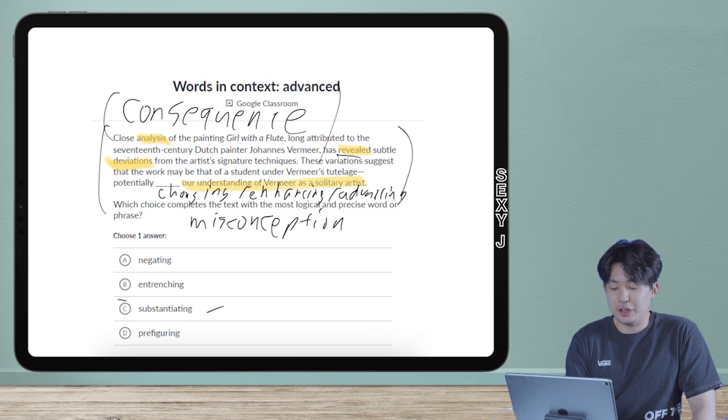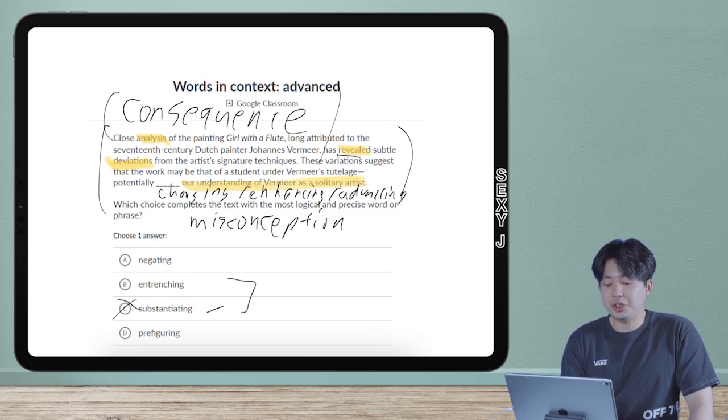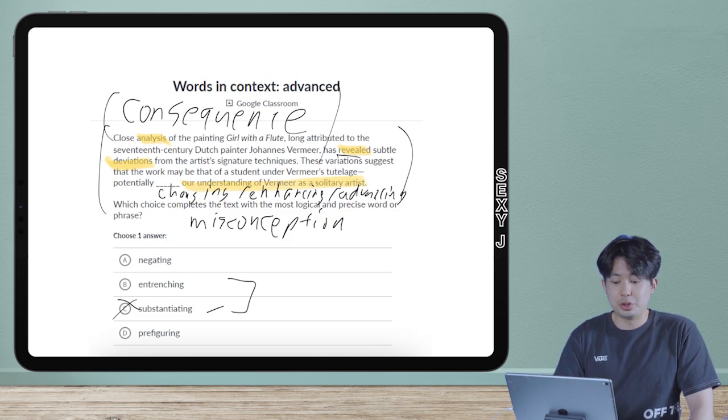So substantiation cannot be for revealing. Substantiation is providing support for something you were already saying. So that is out. Entrenching - again, you do have to study the vocab on your own, guys. So you have to learn these words.